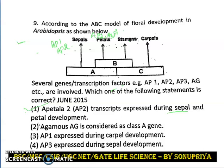Now the second statement: AGAMOUS is considered a class A gene. No — AGAMOUS is responsible for carpel formation and is a class C gene. The third option states APETALA1 is expressed during carpel development — no, it is AGAMOUS, not APETALA1. The fourth option states AP3 is expressed during sepal development — no, AP1 and AP2 are responsible for sepal development, and AP3 is responsible for petal formation from class B. So the correct answer is the first option.